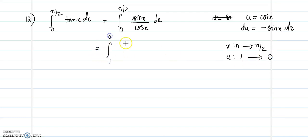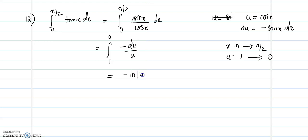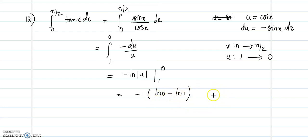We will get the integral from 1 to 0. Since sin(x) dx = -du, substituting gives -log|u| evaluated from 1 to 0. This gives minus (log 0 minus log 1). Since log 0 is not defined, the integral will be divergent.